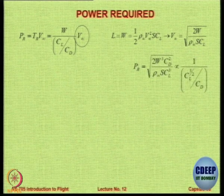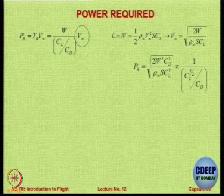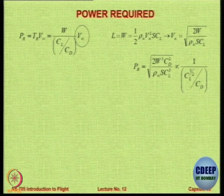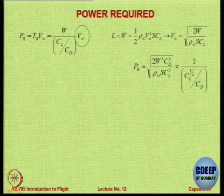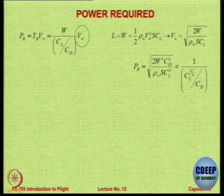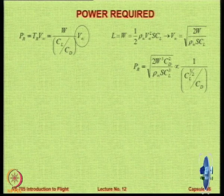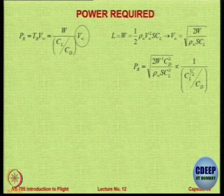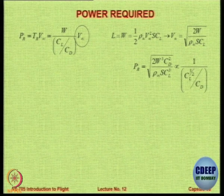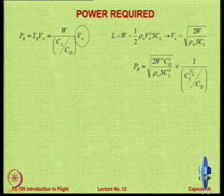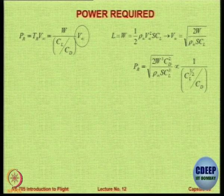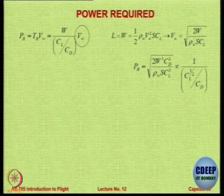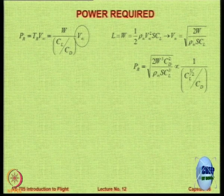You will get an expression for power required as W upon (CL/CD) into V∞. This V∞, which is root of 2W by ρSCL, goes in that place, and the W outside comes inside the square root sign as W squared, so it becomes W cubed. The CL/CD outside comes inside the square root to become CL²/CD². The CL² multiplies with the CL already in the denominator to become CL³. So the expression becomes: Pr = √(2W³ CD² / ρ∞ S CL³).